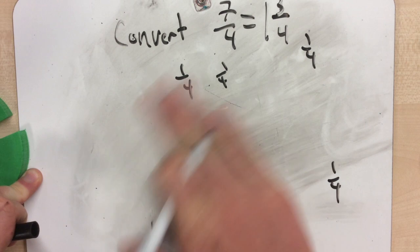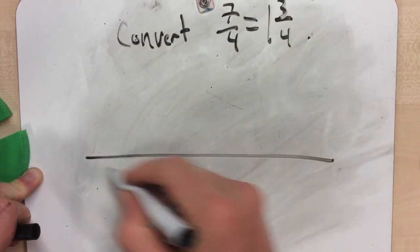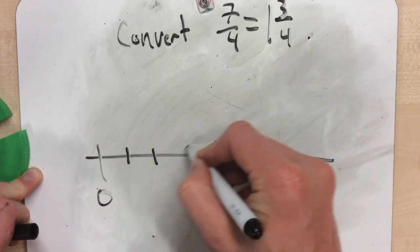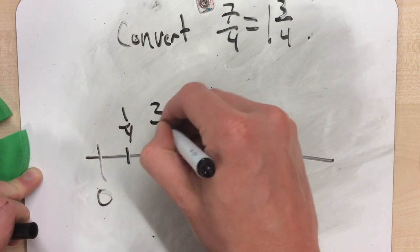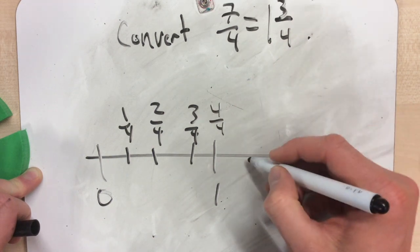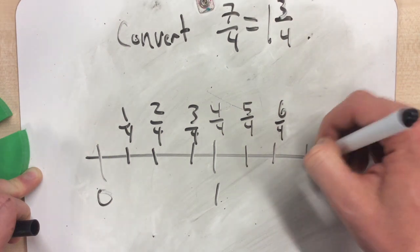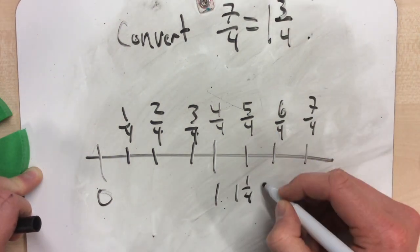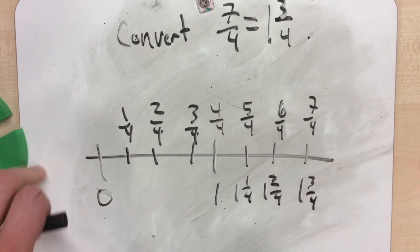If I look at this on a number line, I'll draw my number line and write 0 and 1, then 2, 3, and 4 — so 1 fourth, 2 fourths, 3 fourths, 4 fourths, 5 fourths, 6 fourths, 7 fourths. So this will be 1 and 1 fourth, 1 and 2 fourths, 1 and 3 fourths.